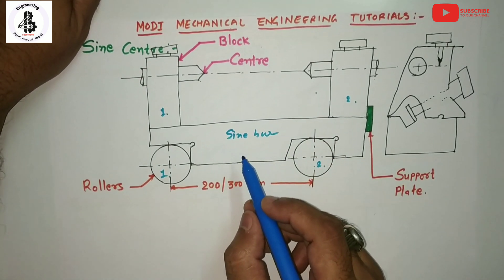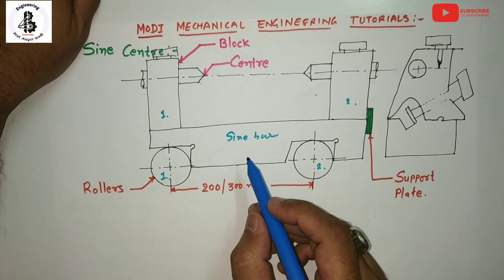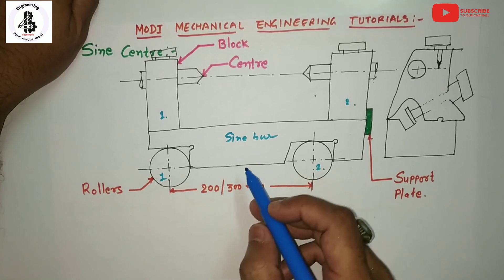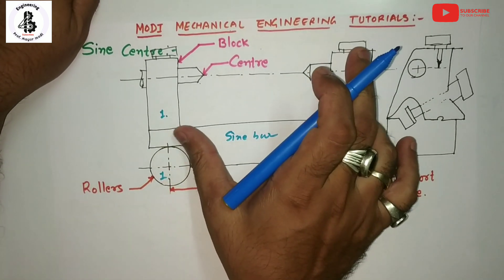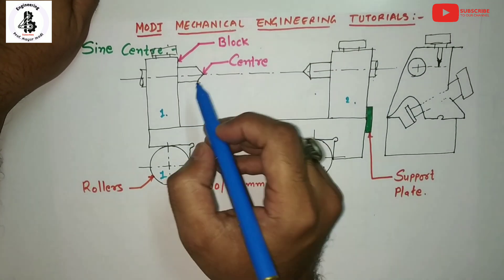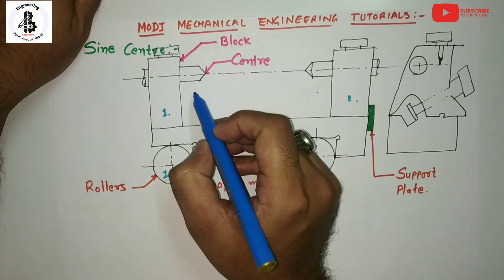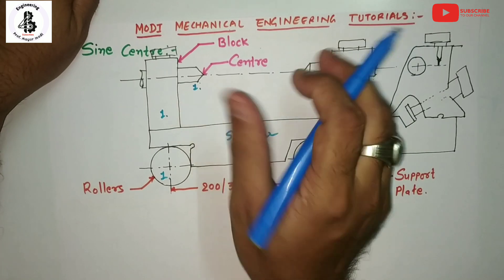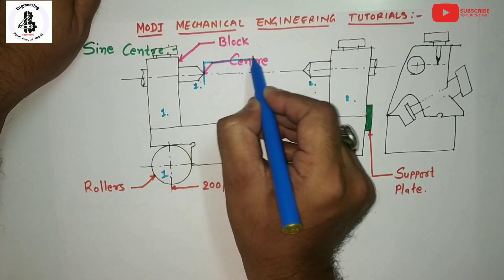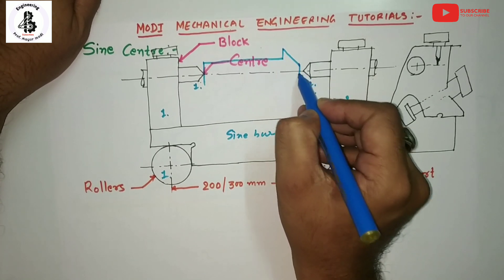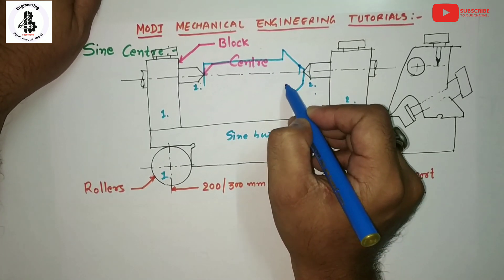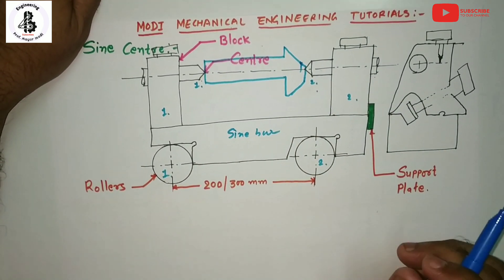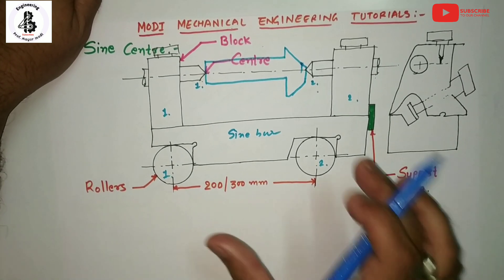These are extremely useful since the alignment accuracy of the centers ensures that the correct line of measurement is made along the workpiece. The centers can also be adjusted depending upon the length of the workpiece. Here, two centers are attached with the blocks — center number one and center number two — and between these two centers we arrange the conical-shaped workpiece, giving higher accuracy for the measurement of angles.